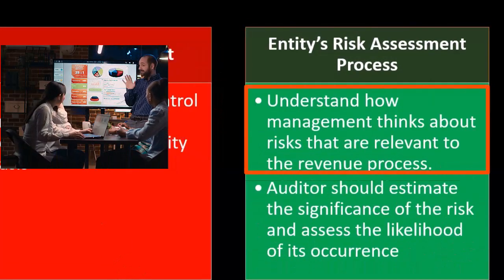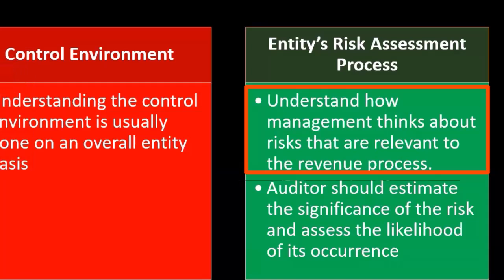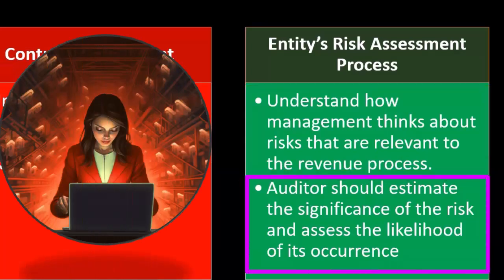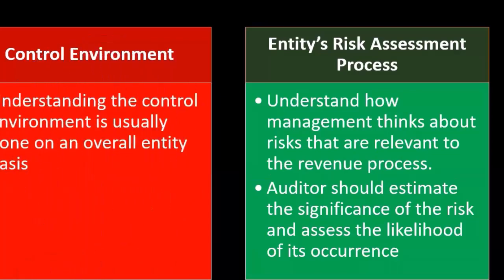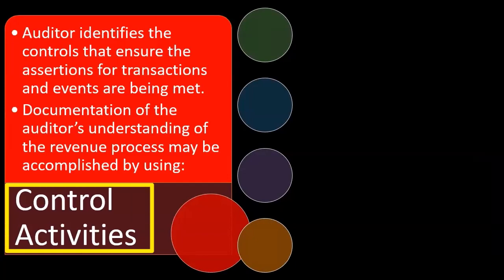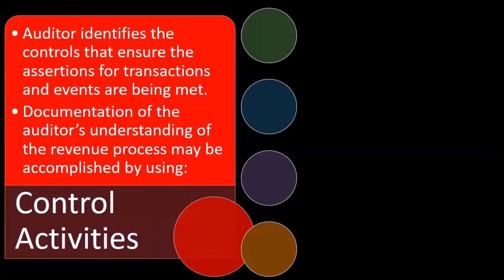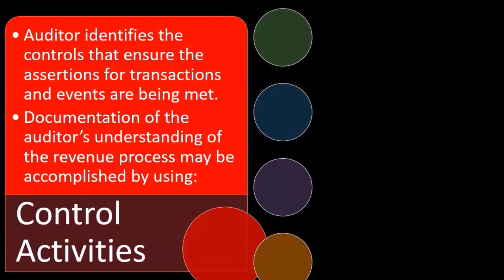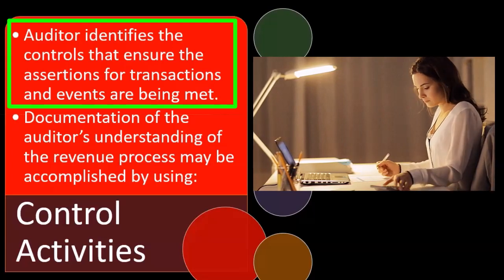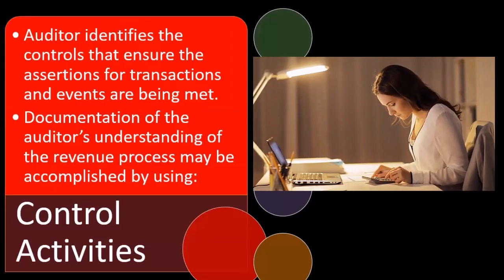We understand how management thinks about risks relevant to the revenue process. Auditors should estimate the significance of the risk and assess the likelihood of its occurrence. Then we consider the control activities — the actual activities set in place within the control system related to revenue — and the auditor identifies the controls to ensure that transactions and events are being properly addressed.